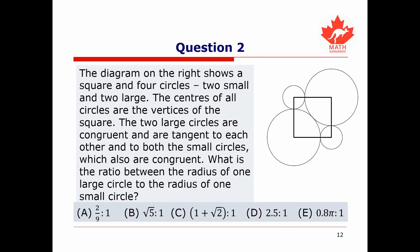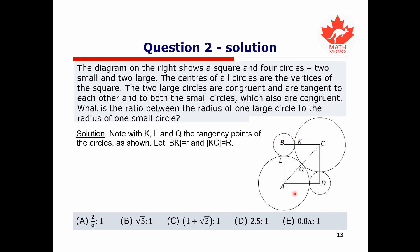Let's now move to the second question. The diagram shows a square and four circles — two small and two large. The centers of all circles are the vertices of the square. The two large circles are congruent and tangent to each other and to both small circles, which are also congruent. What is the ratio of the radius of one large circle to the radius of one small circle? We label the four centers A, B, C, D, the points of tangency K, L, Q, the small circle radius as lowercase r, and the large circle radius as uppercase R.